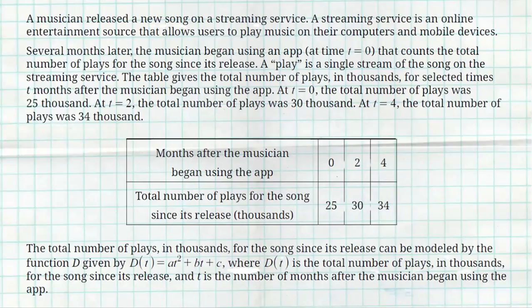So a musician releases a new song on a streaming service. After several months of play, the musician uses an app at time equals zero that counts the total number of plays for the song since its release. A play is a single stream of the song on the streaming service. The table below gives the number of plays in thousands at selected times. So at zero months, it was 25,000 songs, two months 30,000 songs, four months 34,000 songs. The total number of plays in thousands for the song since its release can be modeled with a quadratic equation, D(t) = at² + bt + c, where D(t) is the total number of plays in thousands, and t is the number of months that it's been on the app.